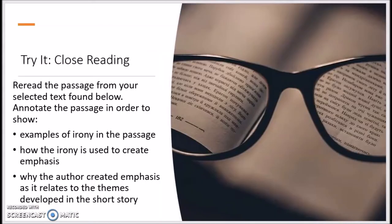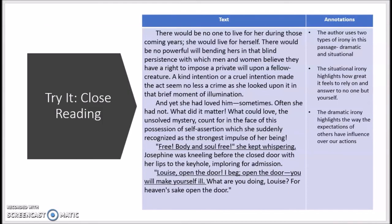Now that I've shown you an example of how irony can help to develop theme, I want you to reread the passage from your selected text. You're going to annotate the passage in order to locate the examples of irony, how the irony is used to create emphasis, and why the author might have wanted to create that emphasis as it relates to the themes developed in the story. I'm going to take a look at an example from The Story of an Hour — this is a rereading, so I'm not going to read the whole passage aloud, but I'm going to think through how I've identified some examples of irony and thought about what the author might have been trying to emphasize.